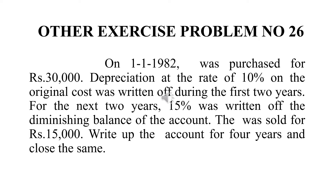So, change in method of depreciation — first the straight line method is followed, and then all of a sudden we switch to the written down value method. In this question, on 1-1-1982, a machine was purchased for $30,000. The first two years followed straight line method, and the next two years used the written down value method. At the end of the fourth year, it was sold for $15,000. We will now determine the profit or loss on sale.